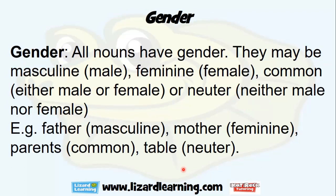Also, a form of noun is gender. All nouns have gender. They may be masculine (male), feminine (female), common (either male or female), or neuter (neither male nor female). For example: 'father' is masculine, 'mother' is the feminine form, 'parents' is common — it can be masculine or feminine — and 'table' is neuter, because it's neither male nor female.